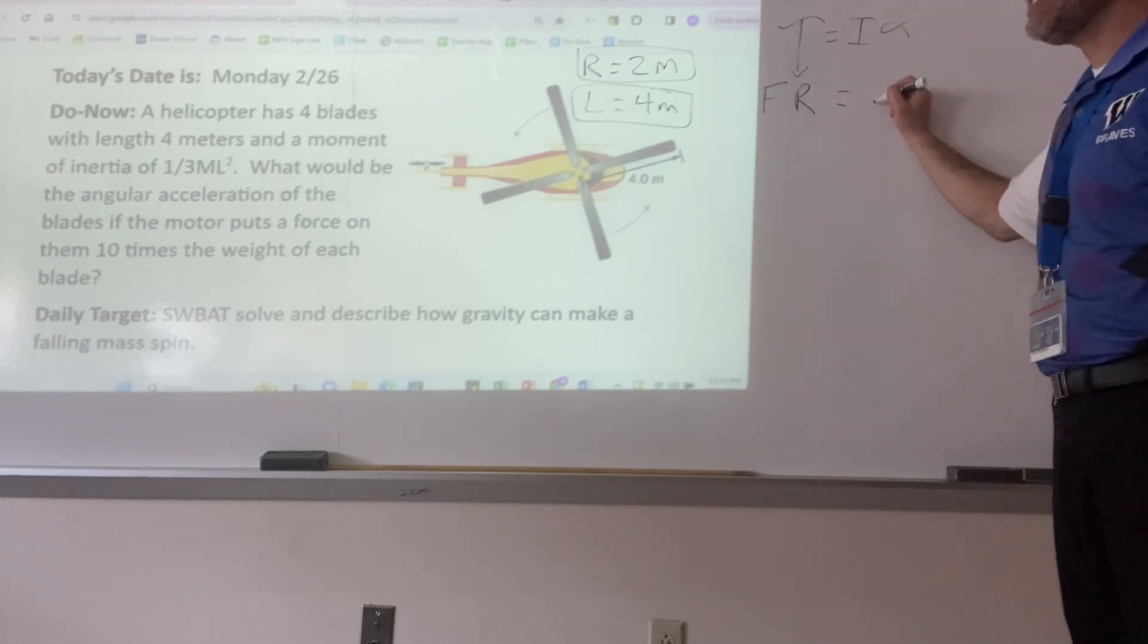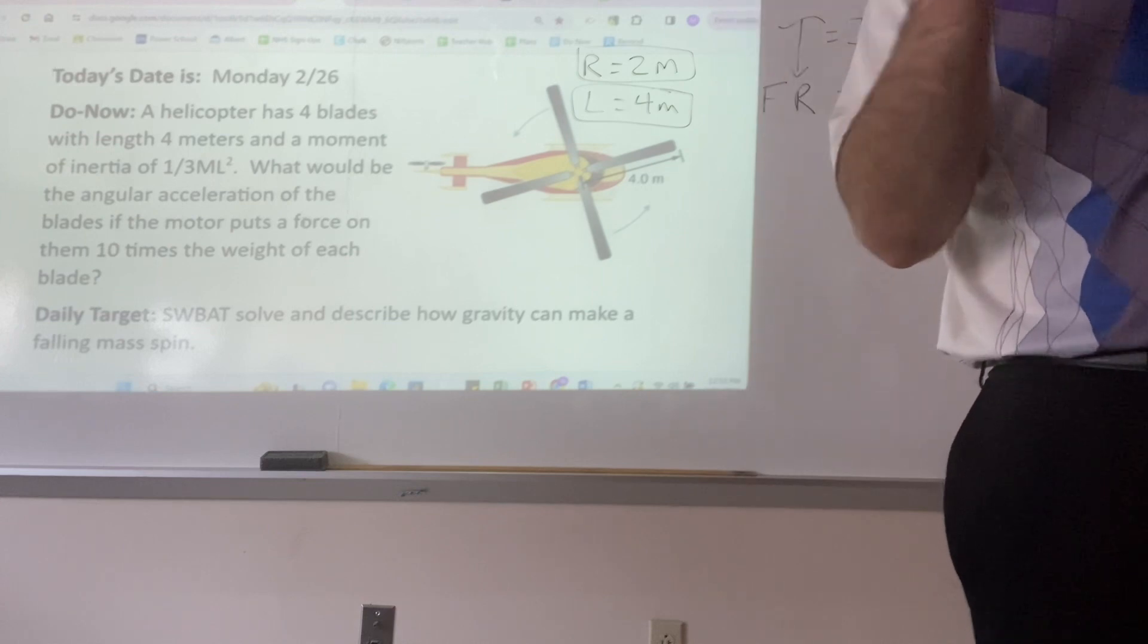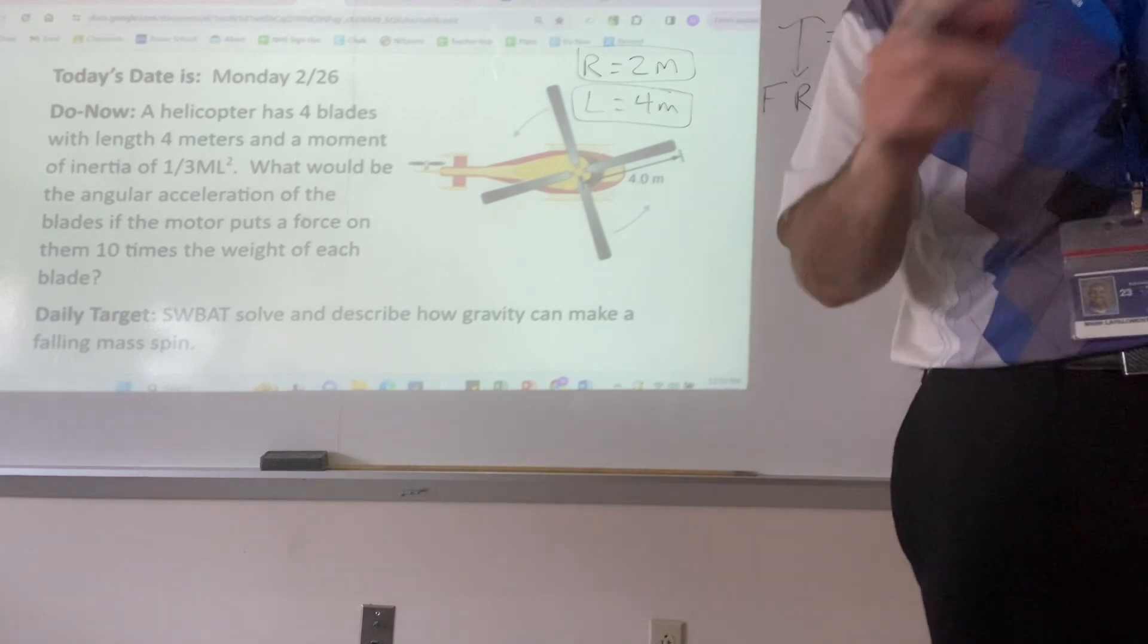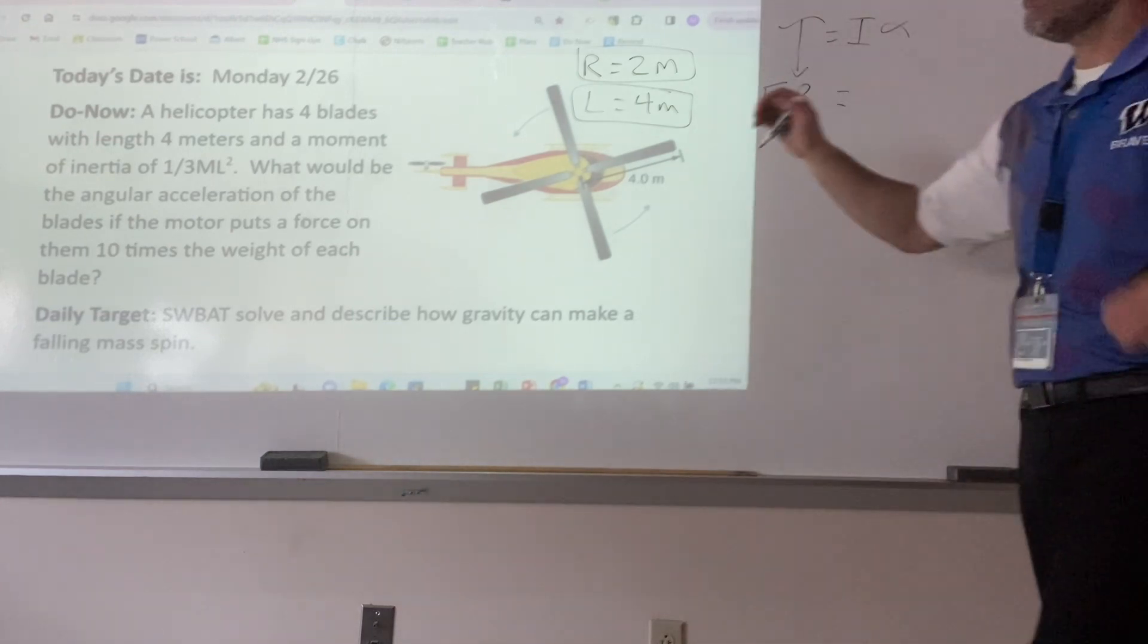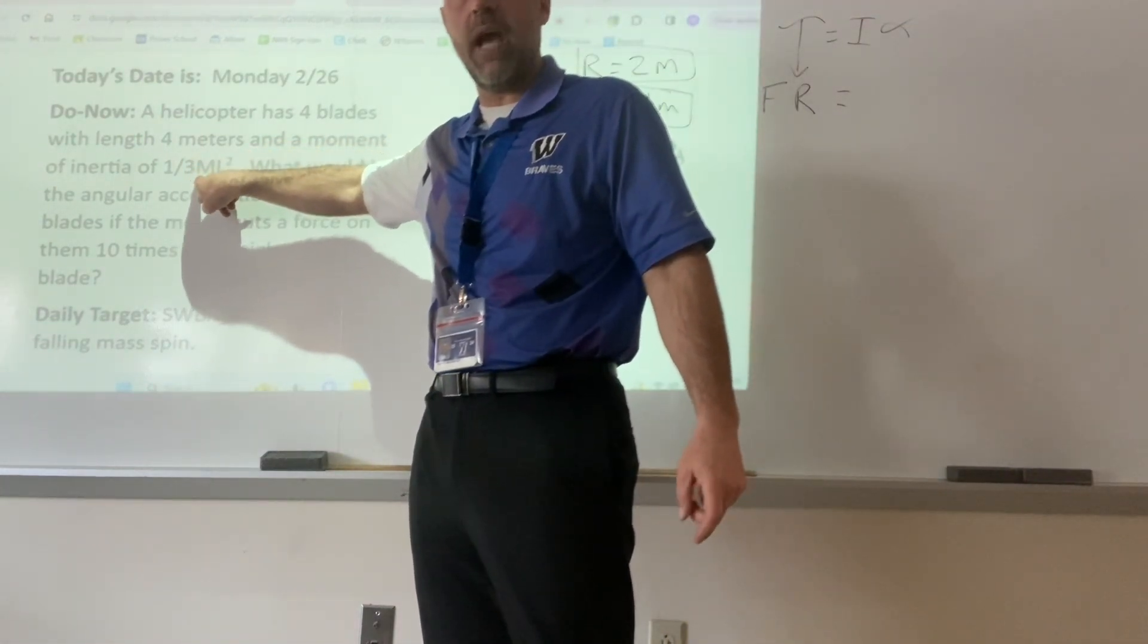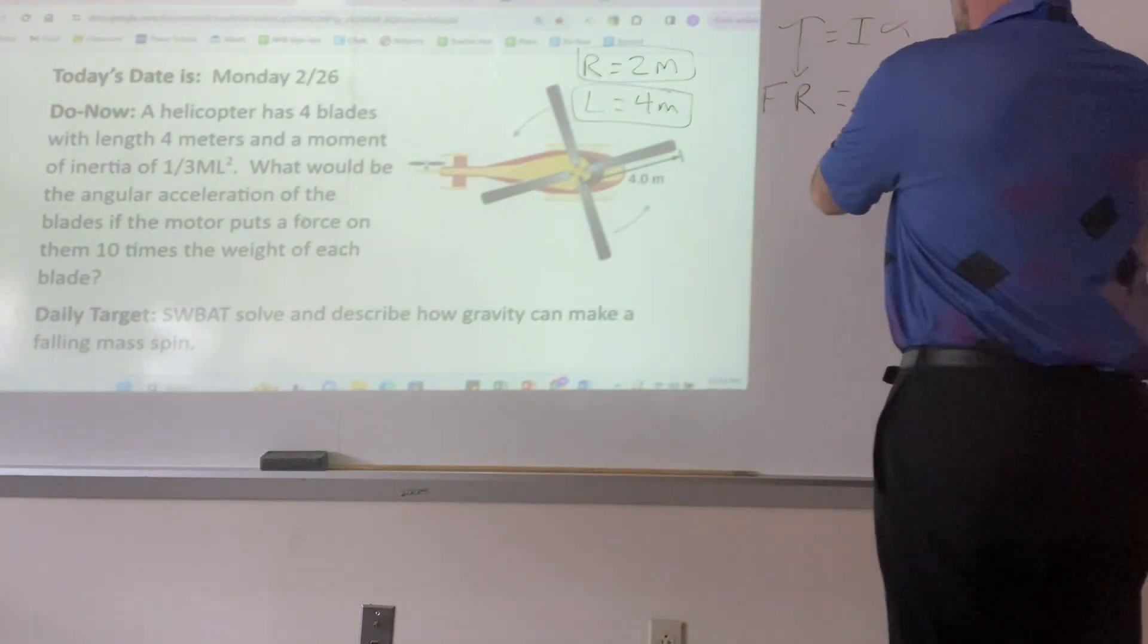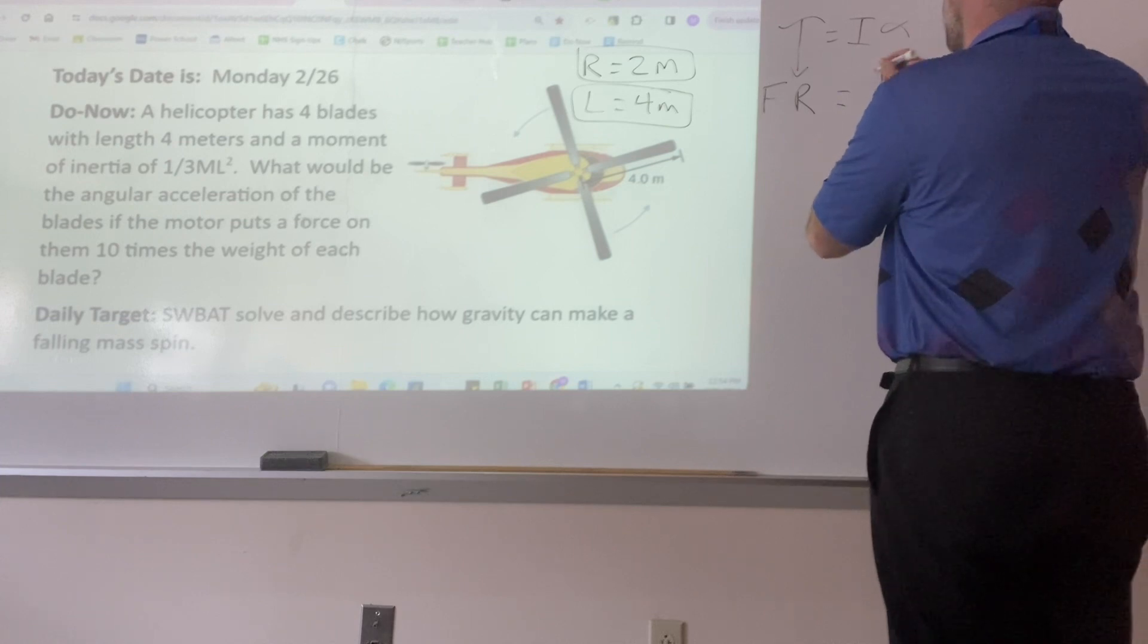Equals I. It's possible that I give you I. The I is 20 kilograms meters squared. Usually, though, I want to give you an equation. You never have to memorize one of these equations. If it's an equation, it will be given to you. So in this one, I said 1 third ML squared. So I'm going to put for I, 1 third ML squared.